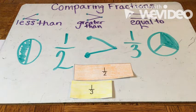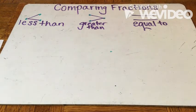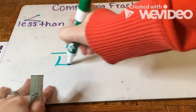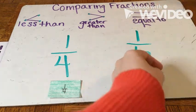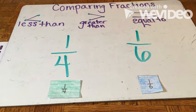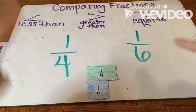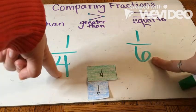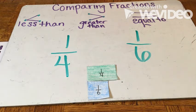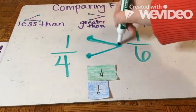Let's try another example. So if I have one-fourth and one-sixth — and remember, if you don't have fraction bars, you can draw the model. I'm going to put my fraction bars together just to help me with that visual. We are going to look at the denominators. I know that four is a smaller number than six, and that means my whole is only broken up into four pieces rather than six. Looking at my fraction bars, one-fourth is greater than one-sixth.